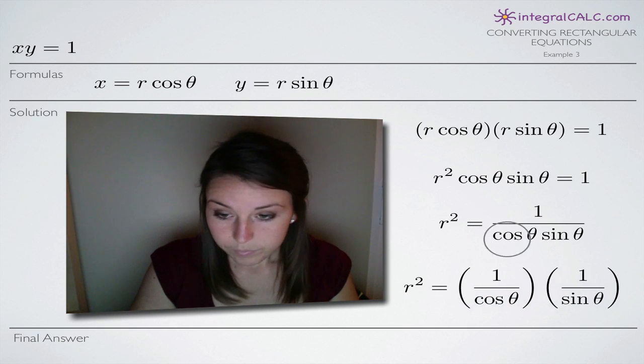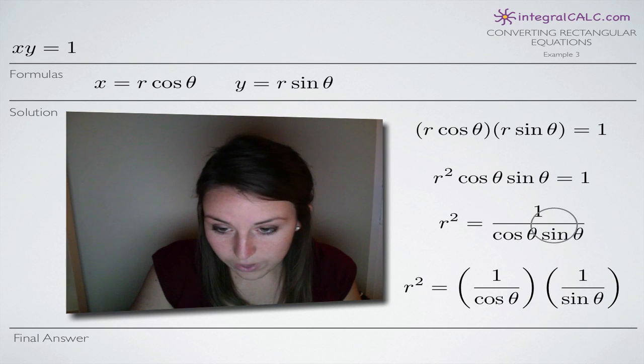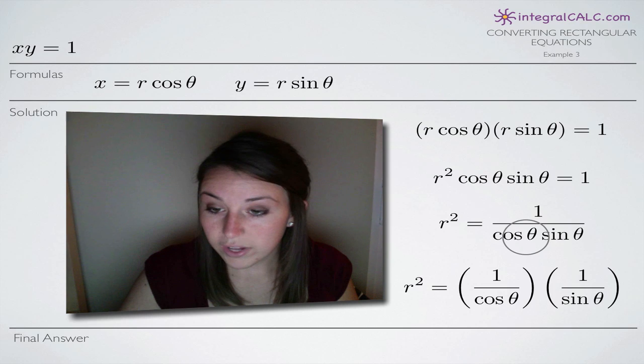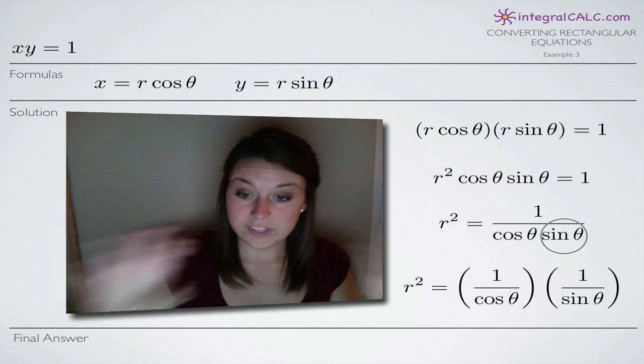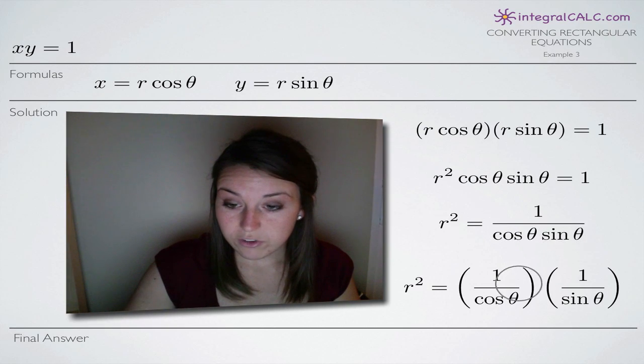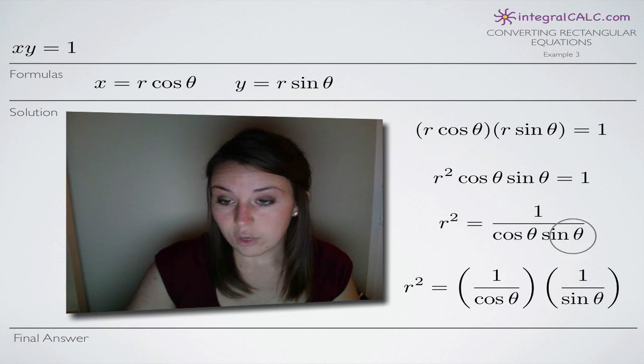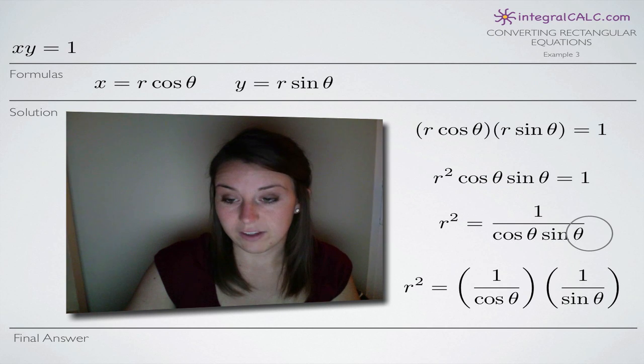Now to simplify the right side, we'll separate cosine of theta and sine of theta into separate fractions. So these two fractions are multiplied together: 1 over cosine theta and 1 over sine of theta. It's equal to 1 over cosine of theta times sine of theta.